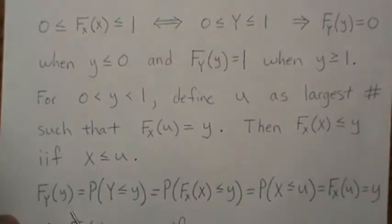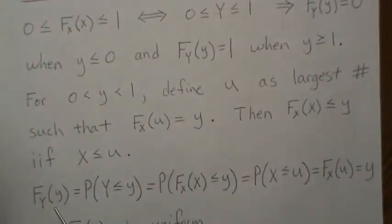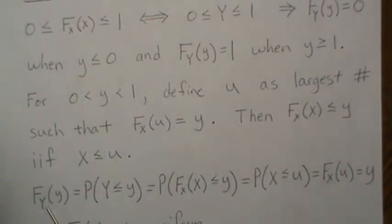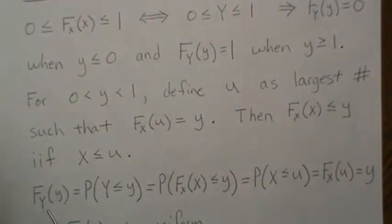So then the CDF of Y - it's the probability that Y is less than some little y. But this we're saying is F of X, and F of X less than y is the same as the probability that X is less than U.